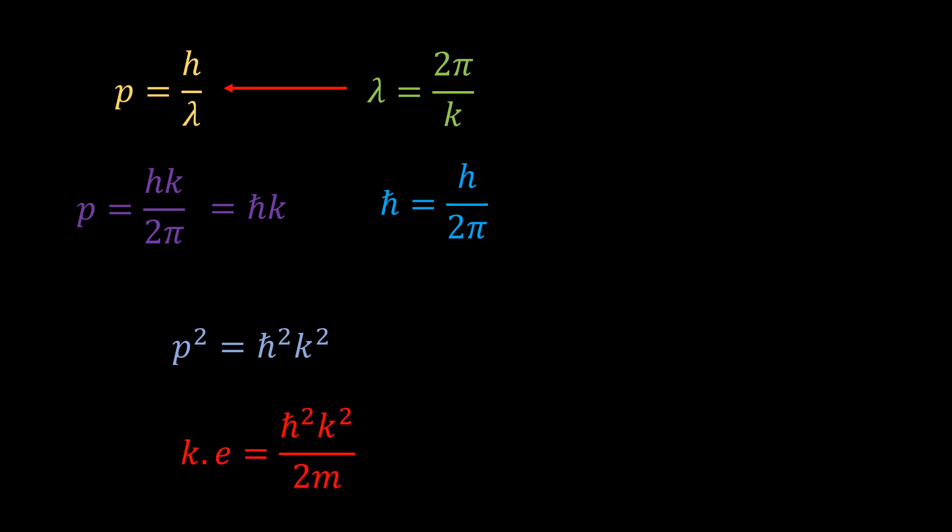At this point, he invoked the de Broglie equation, p equal h over lambda. According to the wave theory, wavelength is equal to 2 pi over k. So subbing lambda into the momentum equation gives p equal to h bar times k, where h bar is the reduced Planck's constant and is equal to the Planck's constant over 2 pi. So p squared becomes h bar squared k squared. And therefore, the kinetic energy becomes h bar squared k squared over 2m.